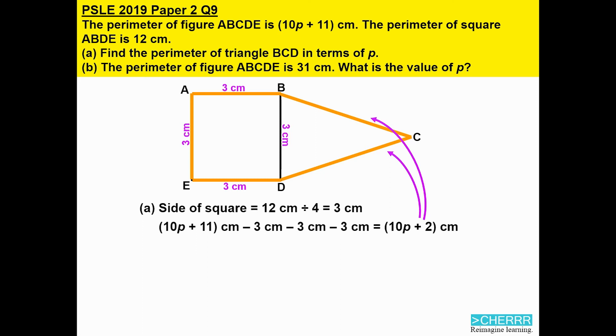We will not take (10p + 2) to divide by 2 because we are not told that these two sides of the triangle BC and CD are exactly the same.